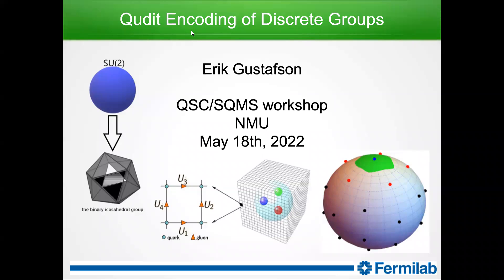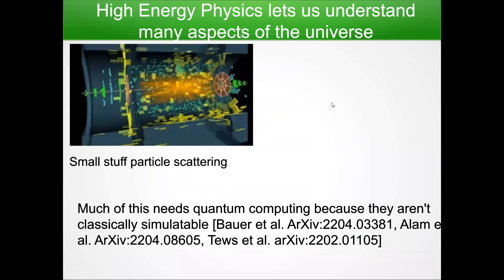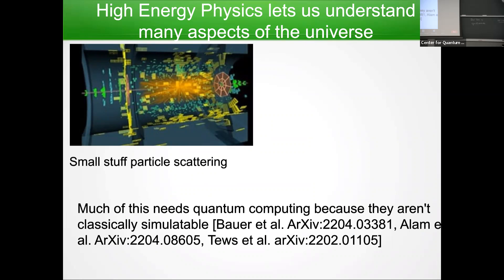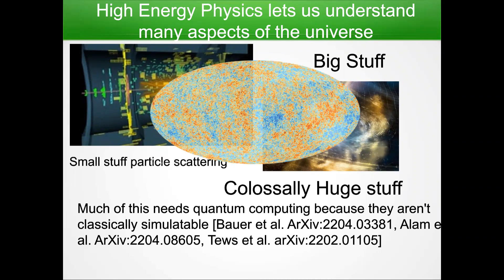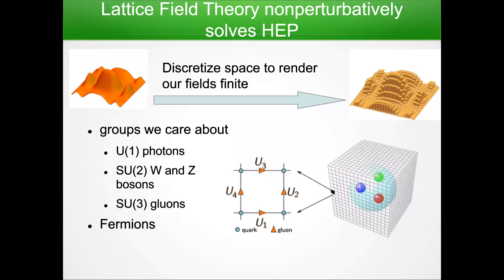Thank you so much. I'm going to be discussing a qudit algorithm for simulating lattice gauge theories, specifically using a formulation of discrete groups. We can take a step back and look at high-energy physics — the things we have built around it let us understand many aspects of the universe, from particle scattering to star mergers. Much of this needs quantum computing because it's not classically tractable due to the sign problem and so forth. So let's focus now on lattice field theory.